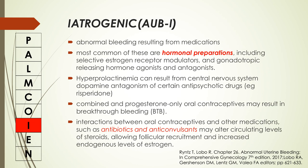Next is AUB-I, or AUB secondary to iatrogenic causes. These are mostly due to medications that the patient is taking. Most common are hormonal preparations, including selective estrogen receptor modulators and gonadotropin-releasing hormone agonists and antagonists. Hyperprolactinemia can result from central nervous system dopamine antagonism of certain antipsychotic drugs such as risperidone. Combined and progesterone-only oral contraceptives may result in breakthrough bleeding.